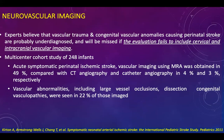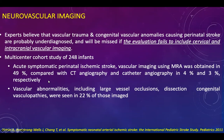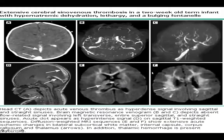Experts believe that congenital vascular anomalies causing perinatal stroke are probably underdiagnosed, and evaluation that fails to include cervical and intracranial vascular imaging will miss many causes. In addition to intracranial vascular imaging, cervical imaging must be included. In a multi-center cohort study of 240 infants, vascular abnormalities including large vessel occlusion, dissection, and congenital vasculopathies were seen in 22% of those imaged. Vascular imaging using MRA was obtained in 49% of acute symptomatic perinatal ischemic stroke cases, compared with CT angiography and catheter angiography in 4% and 3% respectively.